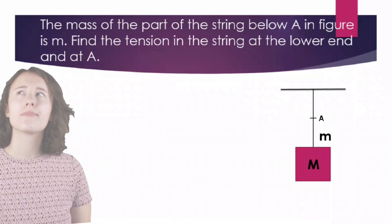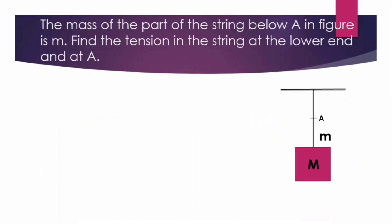So let us first understand the setup. We have a block of mass capital M which is held by a string. The string here is not massless. The mass of the string below the point A is m, and the block capital M is held to the string.